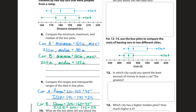For car B, the range is 205 minus 160, which also equals 45. They both have the same range. The box for car B is shifted to the right, but the distance from the lower dot to the upper dot is the same. The interquartile range for car B is 200 minus 175, which is also 25. So both cars have the same IQR — the box is the same size — but the distribution is different. Car B is shifted more to the right, car A more to the left. The variability is the same, but the distribution of the data is different.